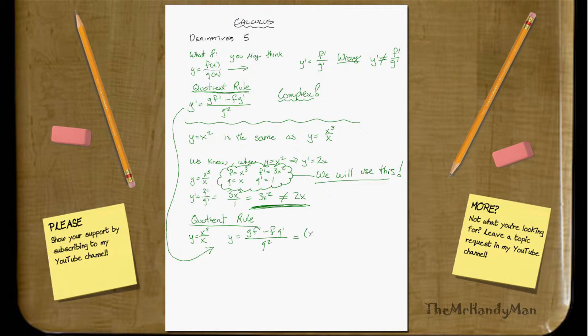So just plug in the numbers. We have x. We have x. We have f prime, which is 3x squared, right? Minus f, which is x cubed, times g prime, which is 1. All over g squared, which is x squared.